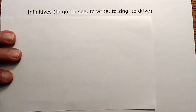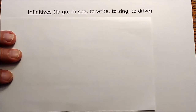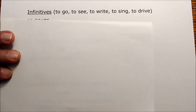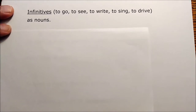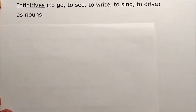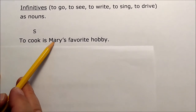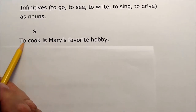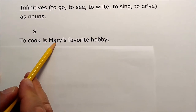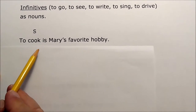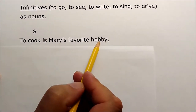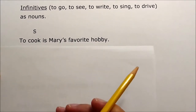Usually when we talk about verbs we refer to them in their infinitive form — to go, to eat, to walk, to see. We can also use the infinitive form as nouns. A noun can be a subject, direct object, or object of the preposition. For example: 'To cook is Mary's favorite hobby' — the subject is 'to cook,' and 'hobby' is the subject equivalent, with 'Mary's' and 'favorite' as adjectives describing hobby. The verb is 'is.'